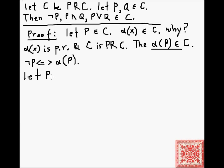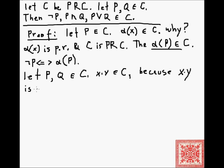Now let's talk about P-and-Q. Let P and Q be in C. We use the fact that binary multiplication is primitive recursive. Since x times y is a primitive recursive function, it belongs to every primitive recursively closed class, so it is in C. Therefore P-and-Q can be defined as P times Q, which means P-and-Q is also in C.